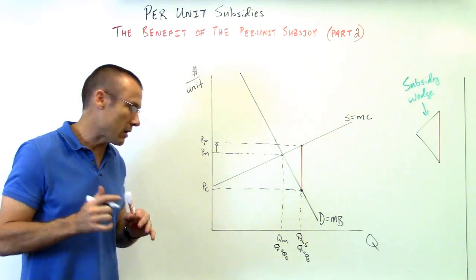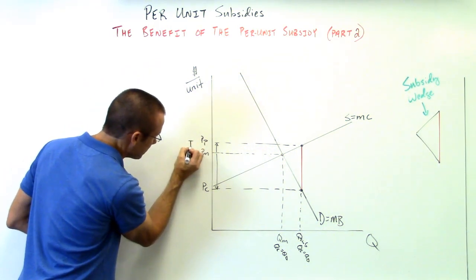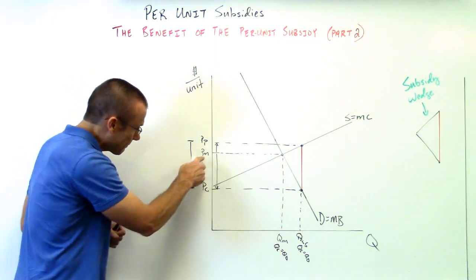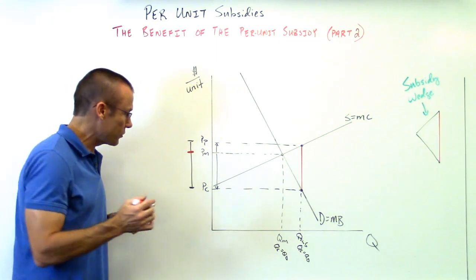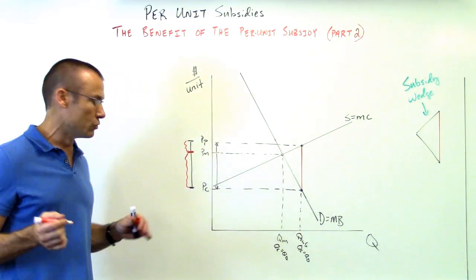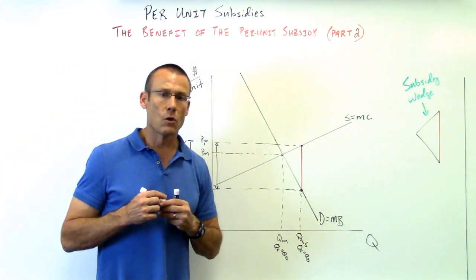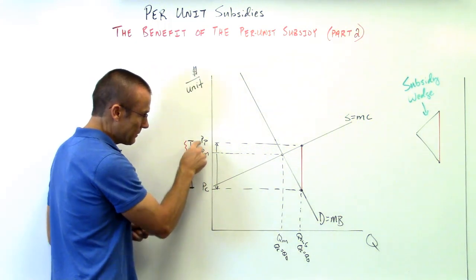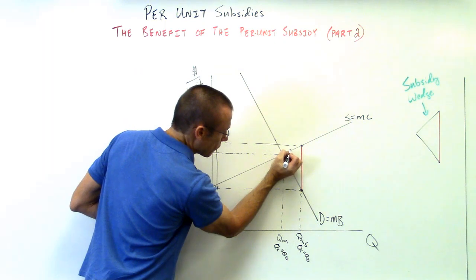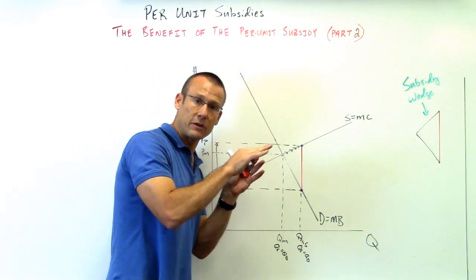The bottom of the subsidy wedge is touching the demand curve — that's price consumer, PC. Here's the takeaway: price producer went up — producers are happy, their per unit revenue is going up — but by a far less amount than price consumer went down. The consumer loves it when their price goes down. The per unit subsidy from PP to PC is that vertical distance. This amount going to the producer — they're happy — but a far larger benefit is going to the consumer.